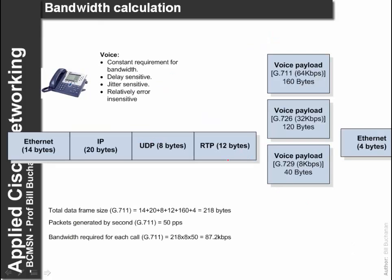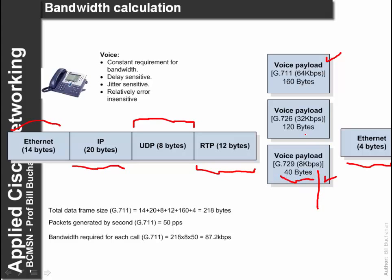So what is the basic calculation for voice? If we are transmitting in an Ethernet frame, we have a start and an end of our frame, then our IP header, and voice packets are typically transmitted within UDP rather than TCP to give them a low overhead. After this we have a protocol such as RTP, and then the basic voice payload. The simplest is an 8kbps compressed stream which only requires 40 bytes for the voice payload. A 32kbps stream gives higher quality at 120 bytes.